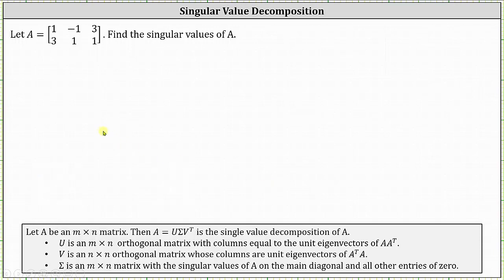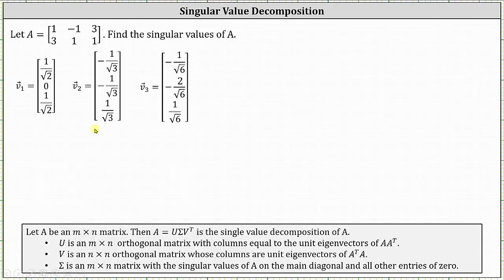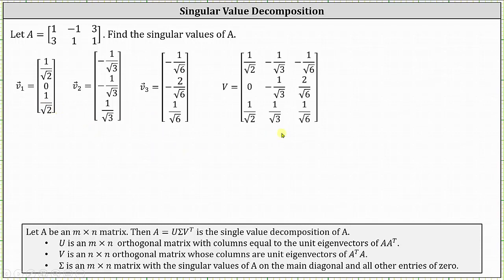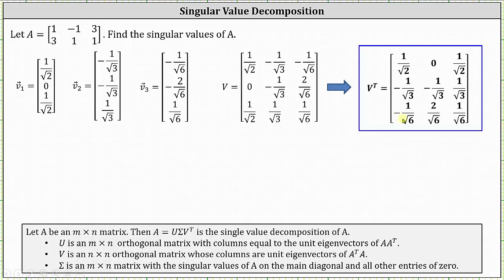Now that we have vectors v₁, v₂, and v₃, we form matrix V where these vectors are its columns. For the singular value decomposition we need V transpose; making the rows of V into columns of V transpose, we now have the matrix V transpose.